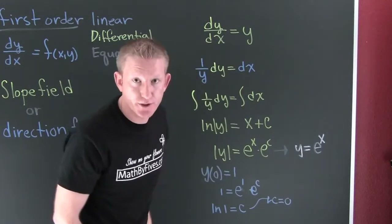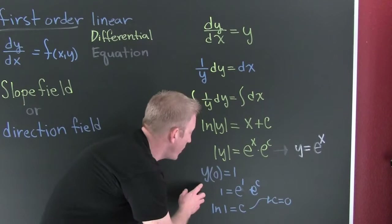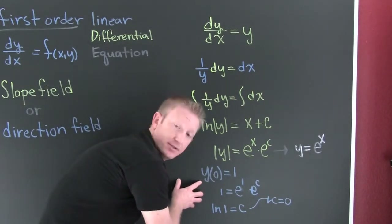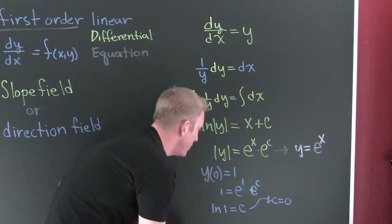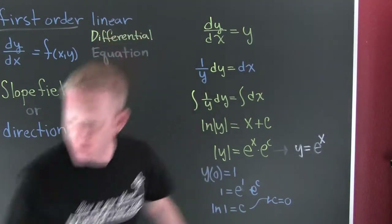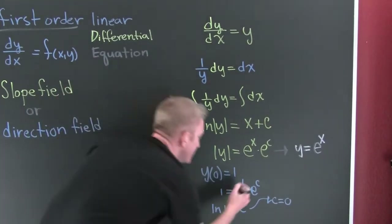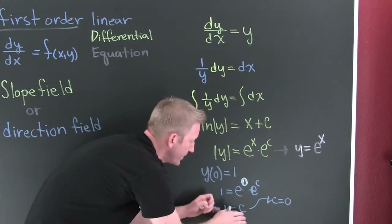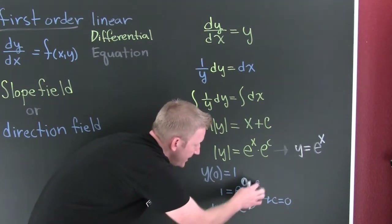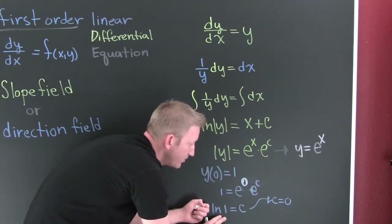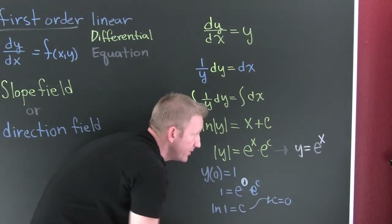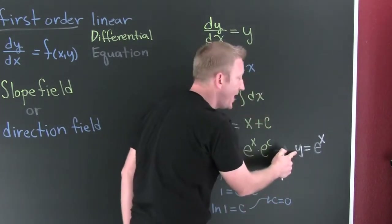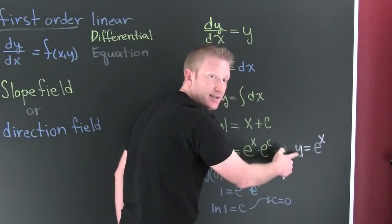Let's find a specific solution. I want to find it where y of zero equals one. Plugging into the appropriate spots: x is zero, e to the zero is one, so one equals e to the c. Taking the natural log of both sides, c equals zero. That gives us the specific solution y equals e to the x.